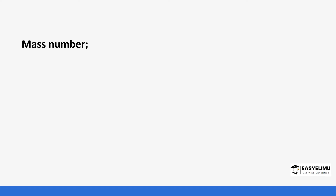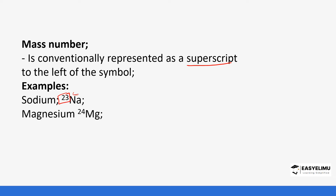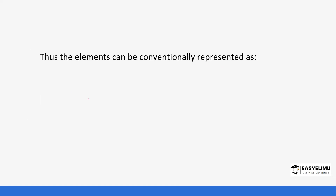When looking at the representation of mass number, the mass number is represented as a superscript placed on the top left of the element symbol. For example, sodium with mass number 23 has 23 at the top left of its symbol. Magnesium has mass number 24 at the top left of its symbol. So sodium is represented with atomic number 11 at the bottom left and mass number 23 at the top left.